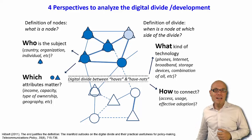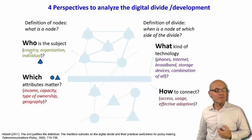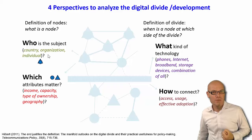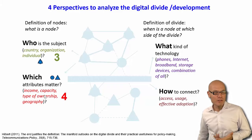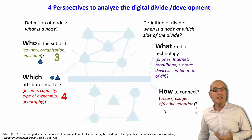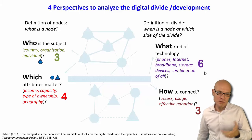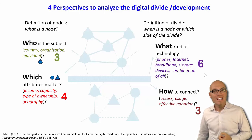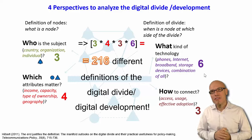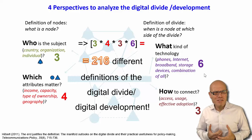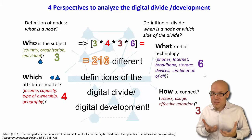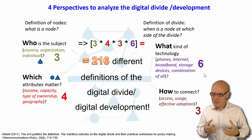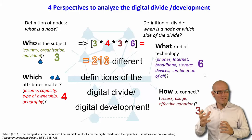Think about it this way: if you follow our framework, you just have different people who study three different kinds of subjects. One studies countries, another organizations, and the third individuals. They study four different attributes — for example income and geography — and three different levels of sophistication: access, usage, impact, and six different kinds of technologies — mobile phone, tablets, broadband, and so forth. That already gives you 216 different definitions of the digital divide. Of course it's not surprising that some conclude the digital divide is closing while others conclude it is widening. They're not lying, and they do their statistics very well — they just look at it from a different perspective.